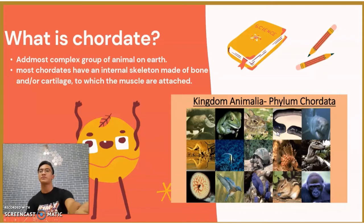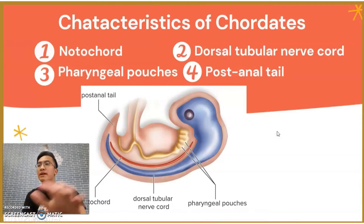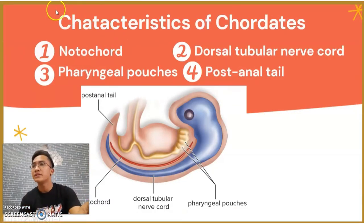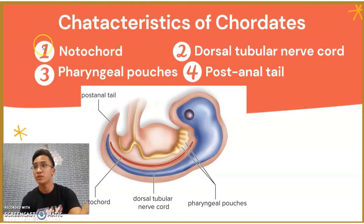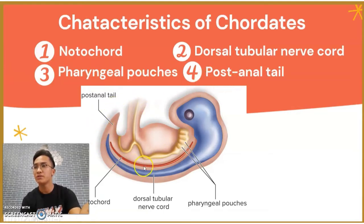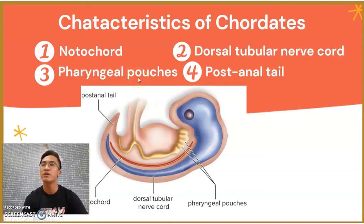Here are the four basic characteristics of chordates. The first one is the notochord. The second one is the dorsal tubular nerve cord. The third one is pharyngeal pouches. And the last one is the post-anal tail.